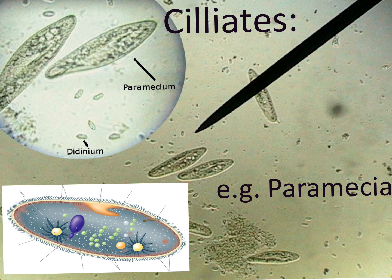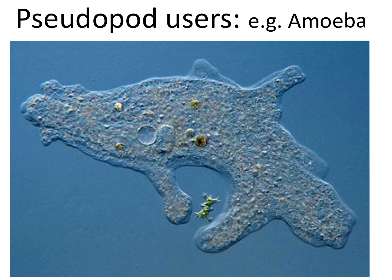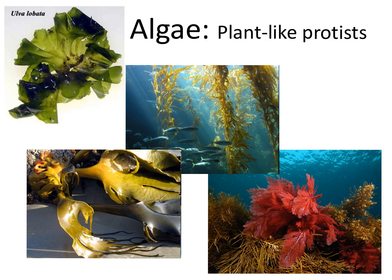First is paramecium — an example of a protist that uses cilia on the outside of its cell to move around. Euglena is an example of a protist that moves using flagella. You can also see by its green color that euglena sometimes gets its food autotrophically by photosynthesizing. Amoeba are a famous example of organisms that use pseudopods both to move and to engulf small organisms for food. A final famous category of protists are the algaes.